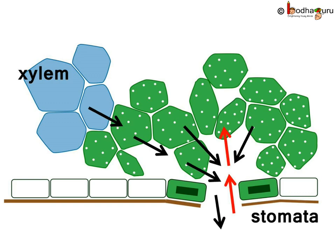The same process is followed for carbon dioxide. Oxygen and carbon dioxide travel from one cell to another, or from one cell to intercellular space and then to the next cell, through diffusion. But it's the plant's transportation system which carries substances to longer distances using water as the transport medium.